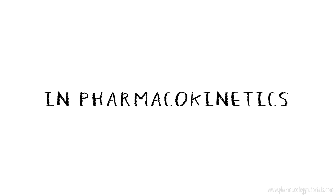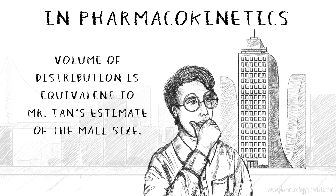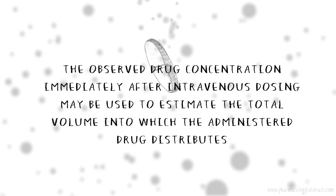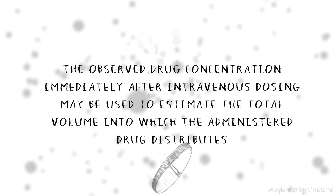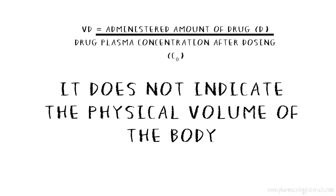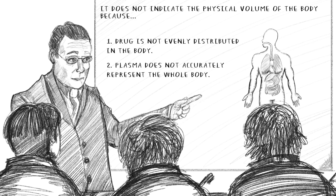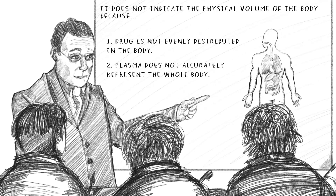In pharmacokinetics, the understanding of the volume of distribution is the equivalent of Mr. Tan's estimate of the mall size. The observed drug concentration immediately after intravenous dosing may be used to estimate the total volume into which the administered drug distributes. However, this does not indicate the physical volume of the body, as it assumes the drug is evenly distributed throughout the body and that the plasma accurately represents every other part of the body.